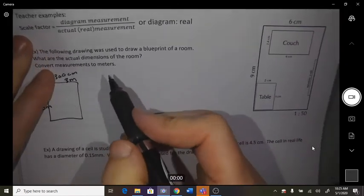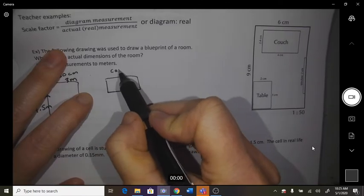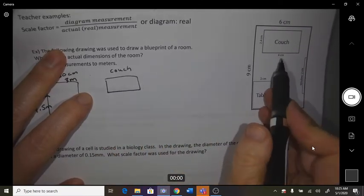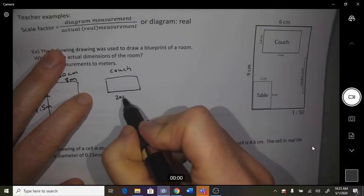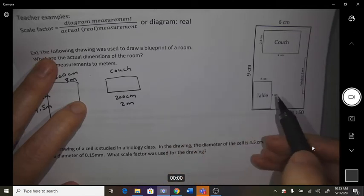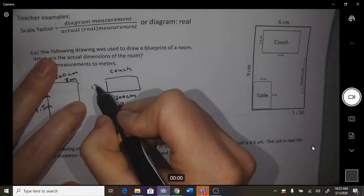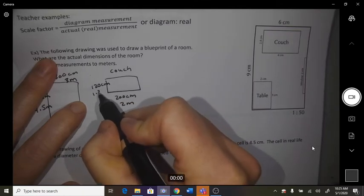Let's do every object. So the couch, times by 50, so 4 times 50 is 200 centimeters, so that's 2 meters. 2.4 times 50 is 120 centimeters, so 1.2 meters.